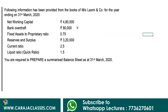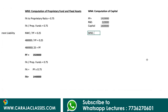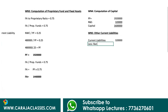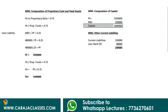Working Note 5 derives other current liabilities. Total current liabilities is 3,20,000. Deducting bank overdraft of 80,000, we get other current liabilities equal to 3,20,000 minus 80,000, which is 2,40,000.